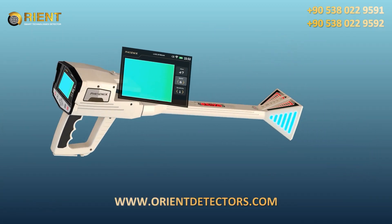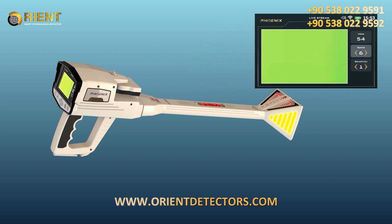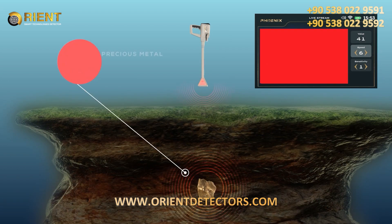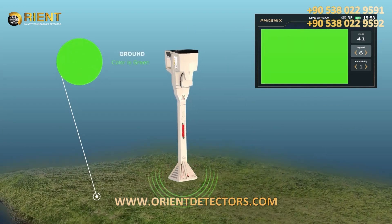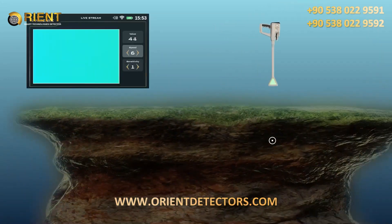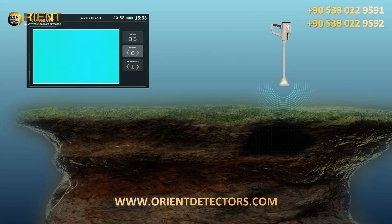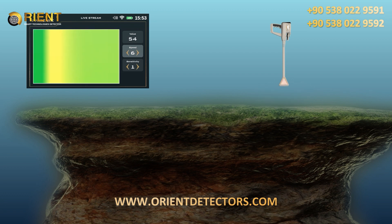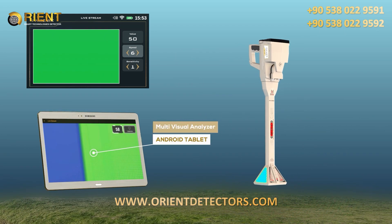The LED lights up red when passing over a precious metal such as copper or silver. The signals captured by the VST probe are represented on the screen as a continuous color stream — red for precious metal, green for ground, blue for cavity — and in conjunction with a color-changing indicator, the device will also make sound tones according to the type of target detected.